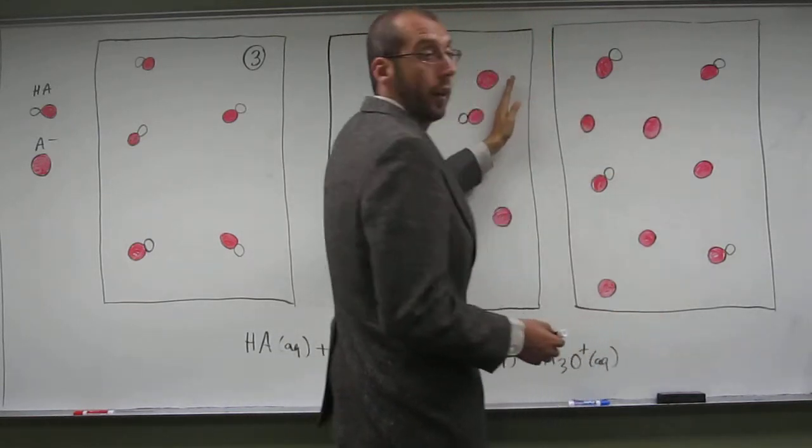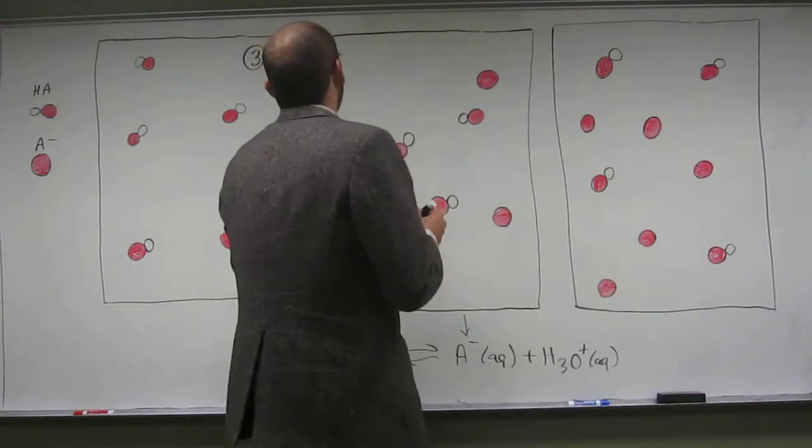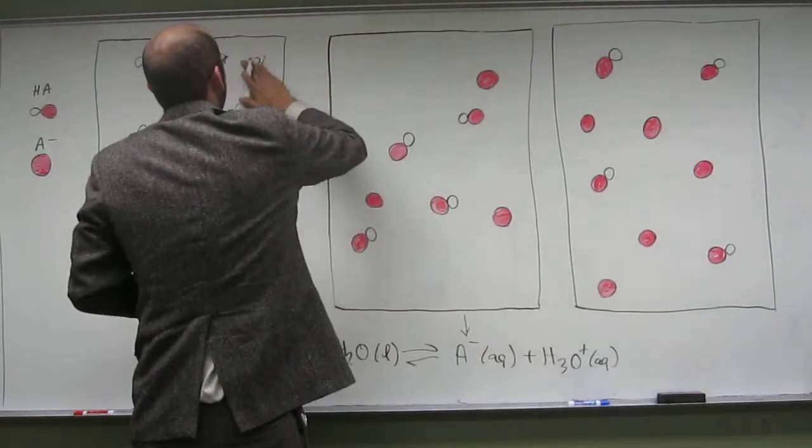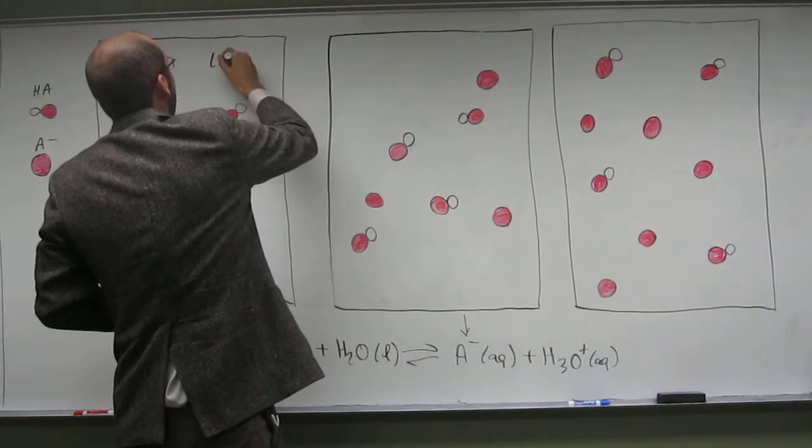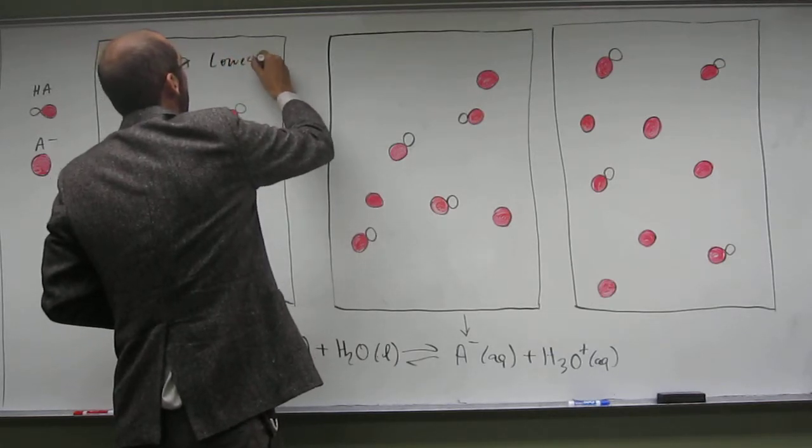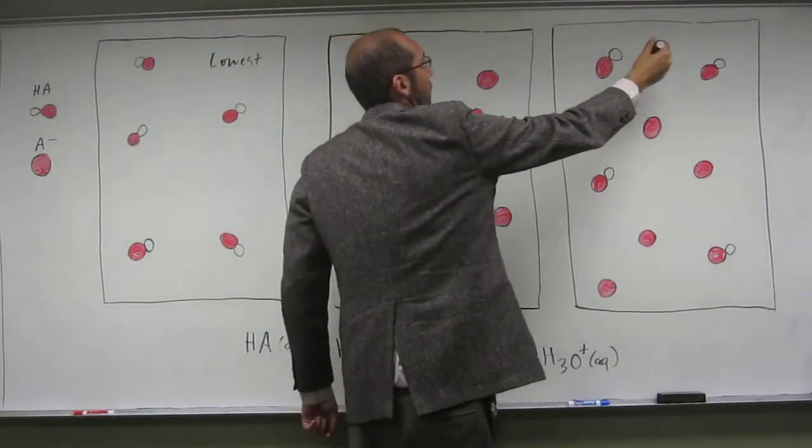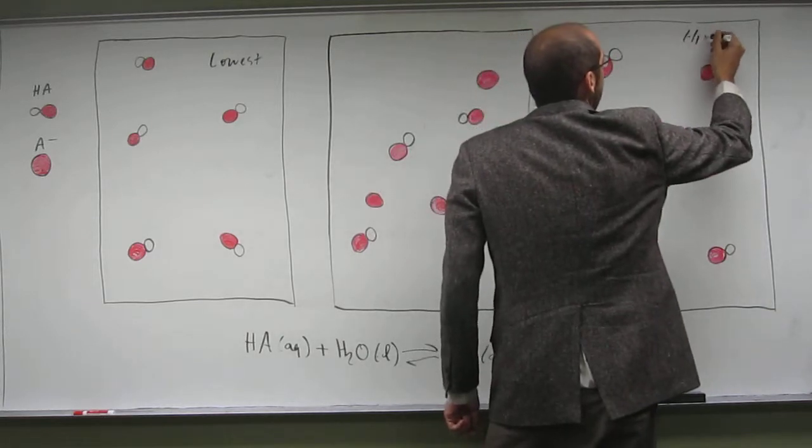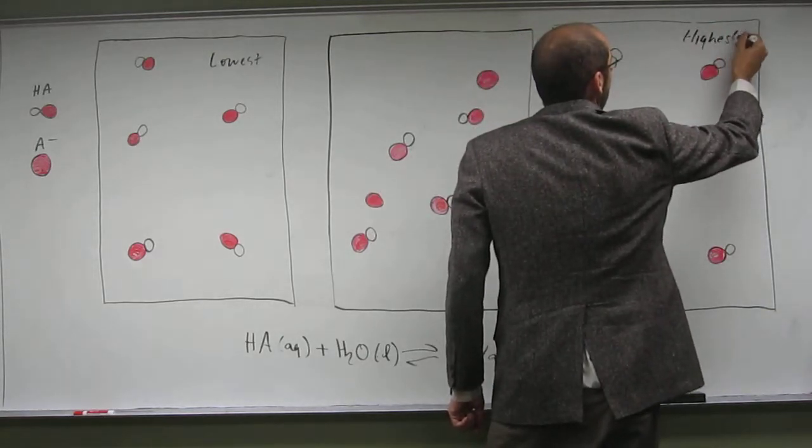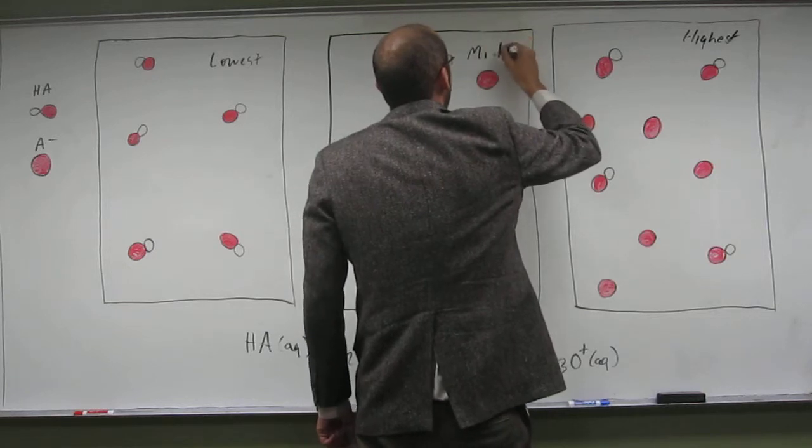This one is going to have the middle pH, and that one is going to have the lowest pH. So, here, let's just do it this way, instead of saying 3, we'll say low, lowest, highest, mid.